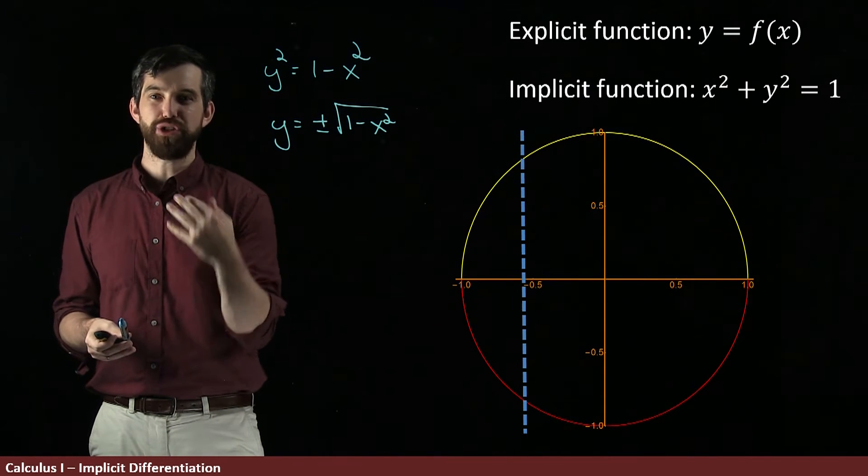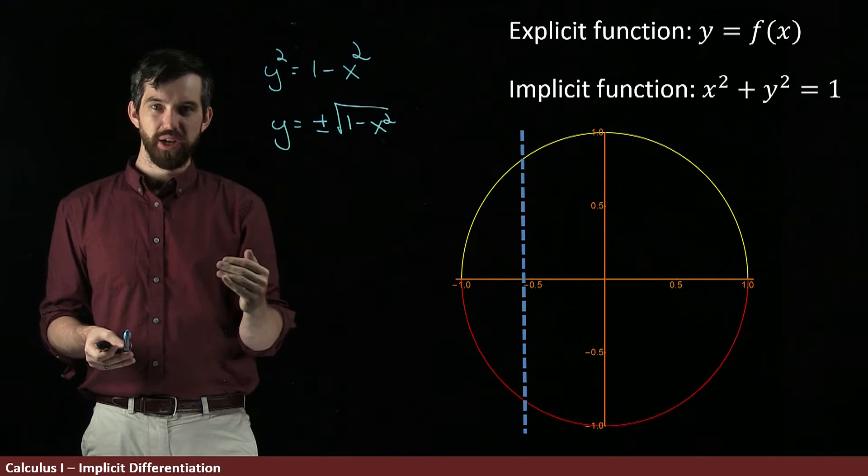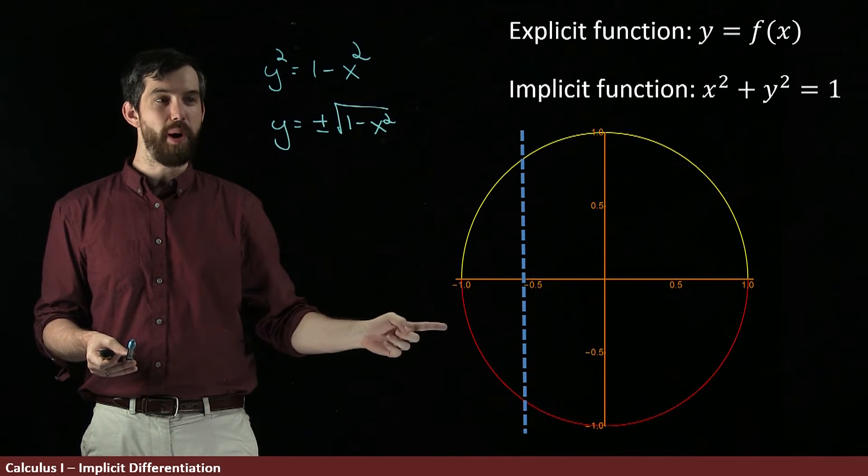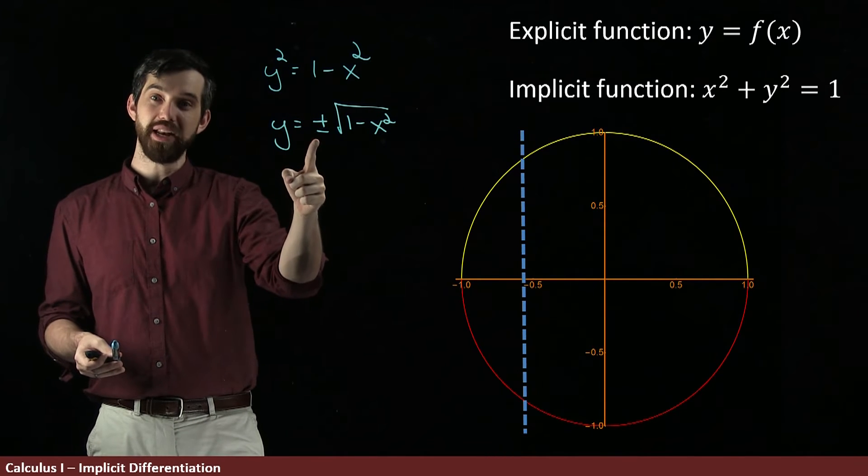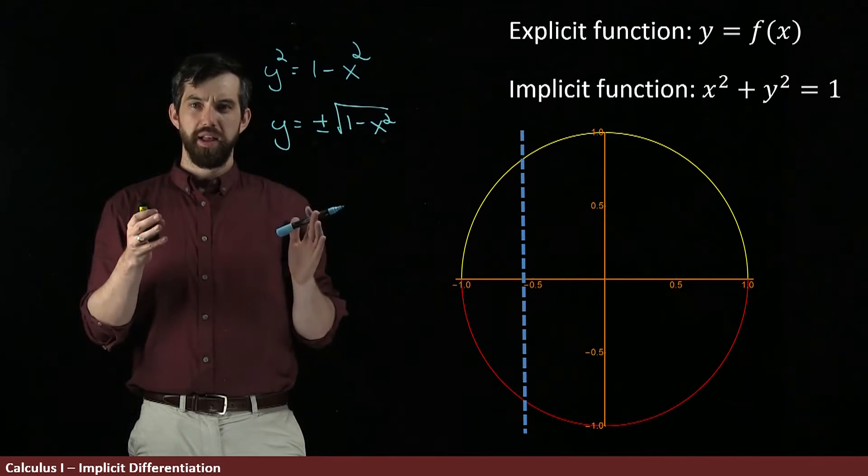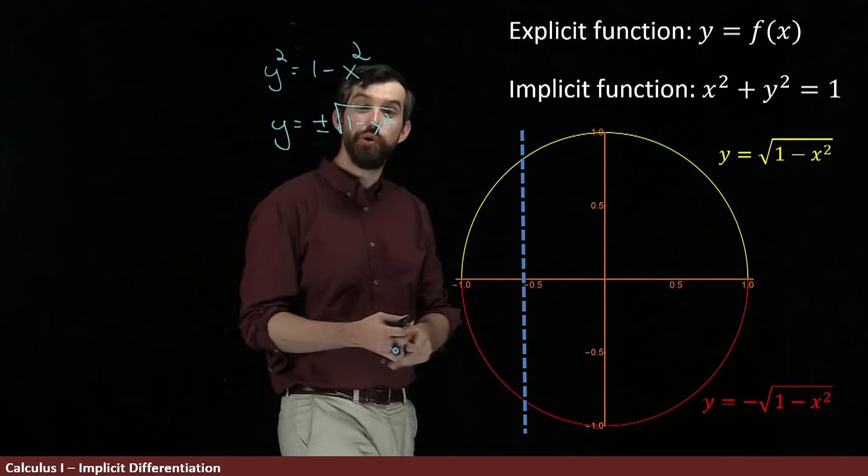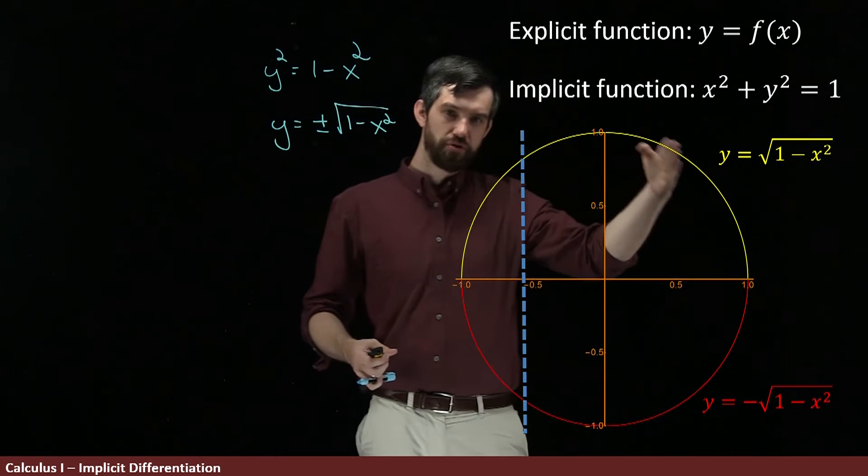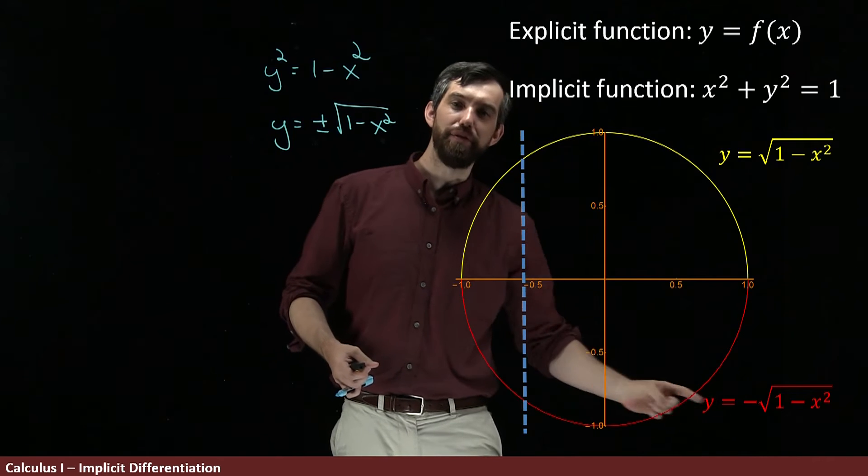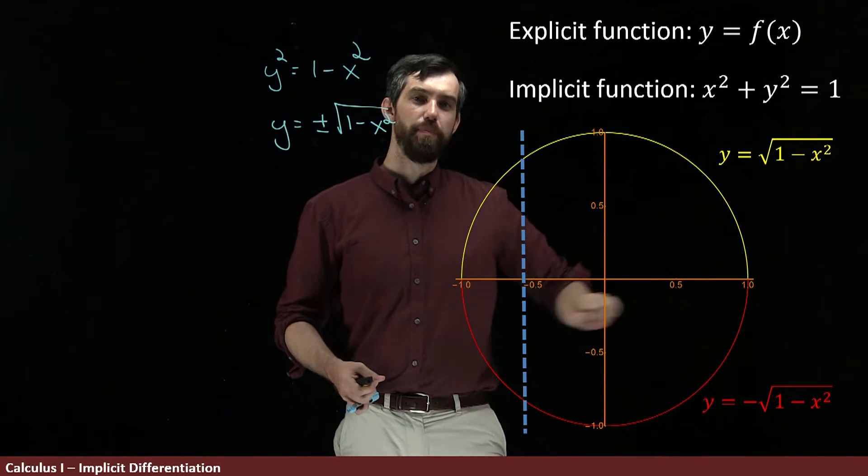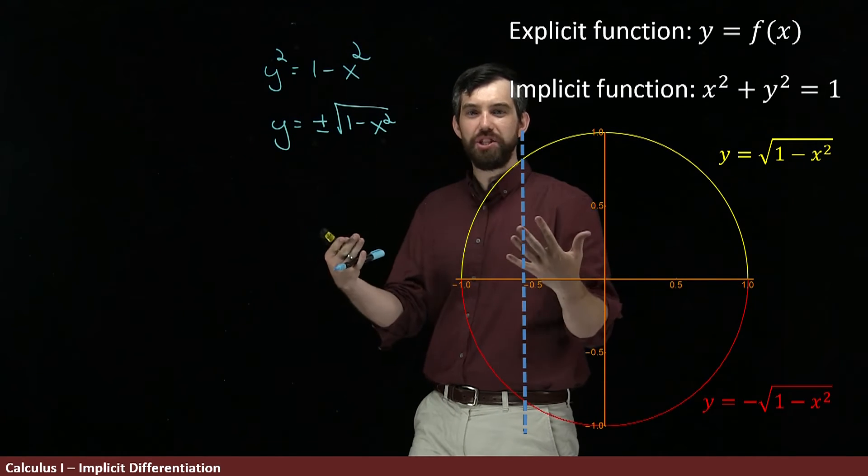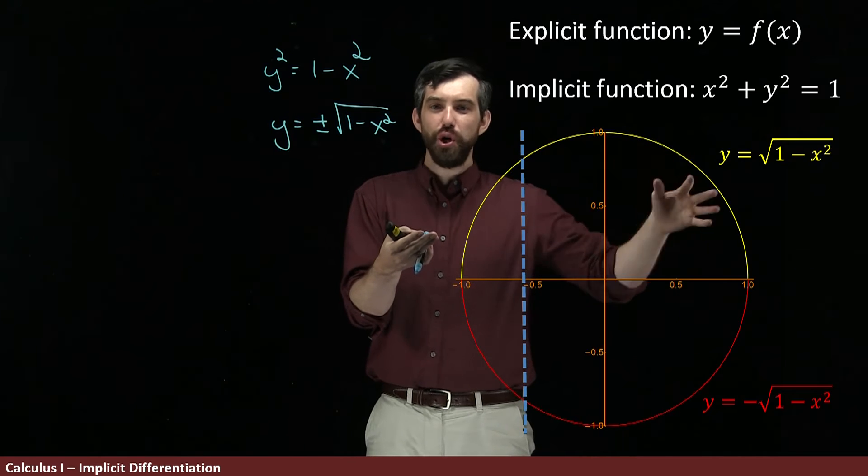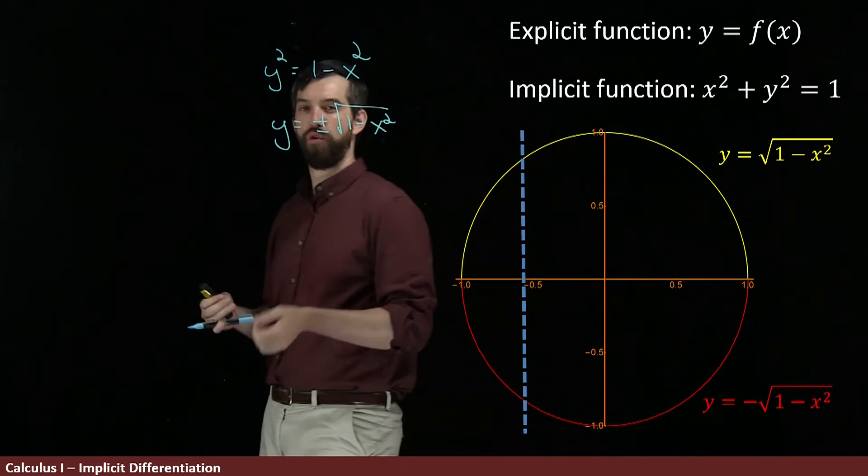I could break these out as two different functions, one that describes the top, one that describes the bottom, using the plus and the minus that I have in my square root. In other words, what I have is two different functions. One, the y equals the positive square root that describes the top. One, the negative square root that describes the bottom. And so that this one equation has resulted in these two different explicit formulas.